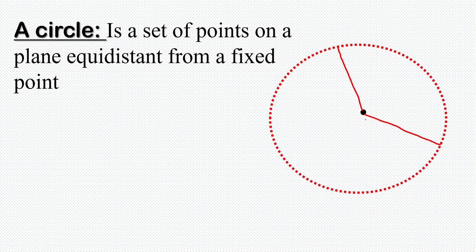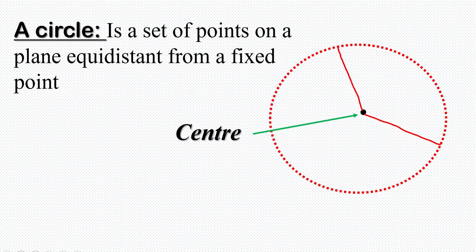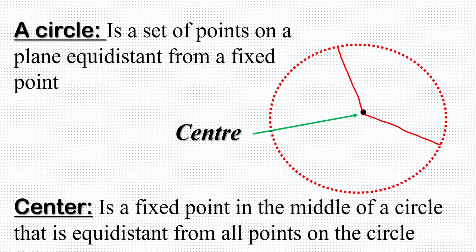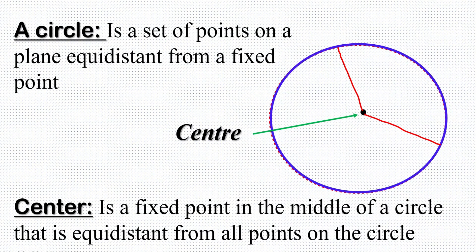The fixed point is what we call the center. When we talk of the center, we are talking about a fixed point in the middle of a circle that is equidistant from all the points on the circle. When we join all these points together, we beautifully have a circle.